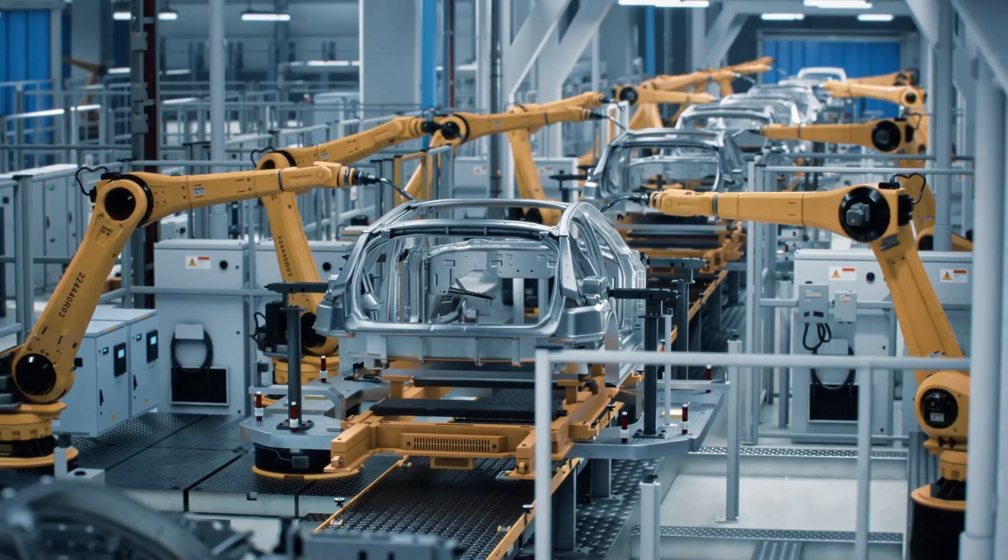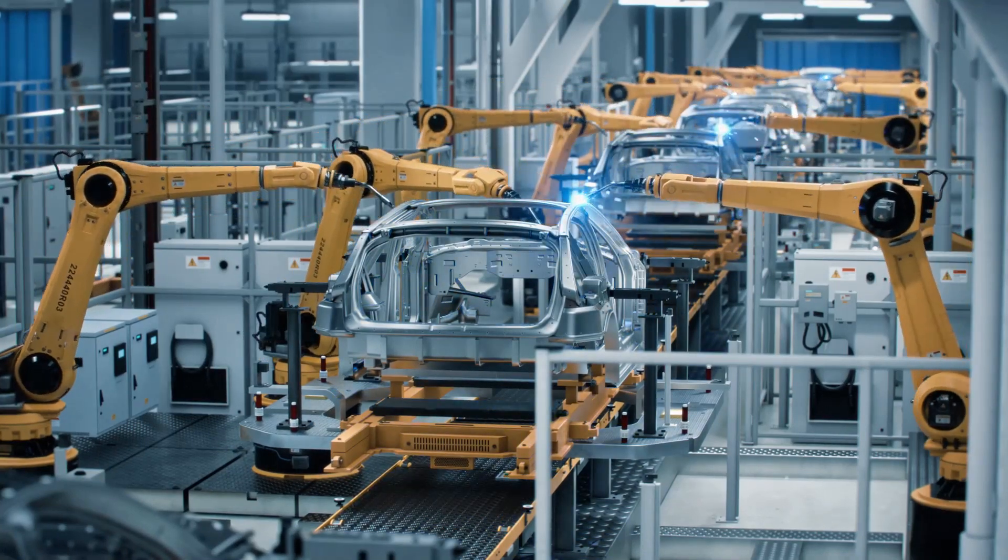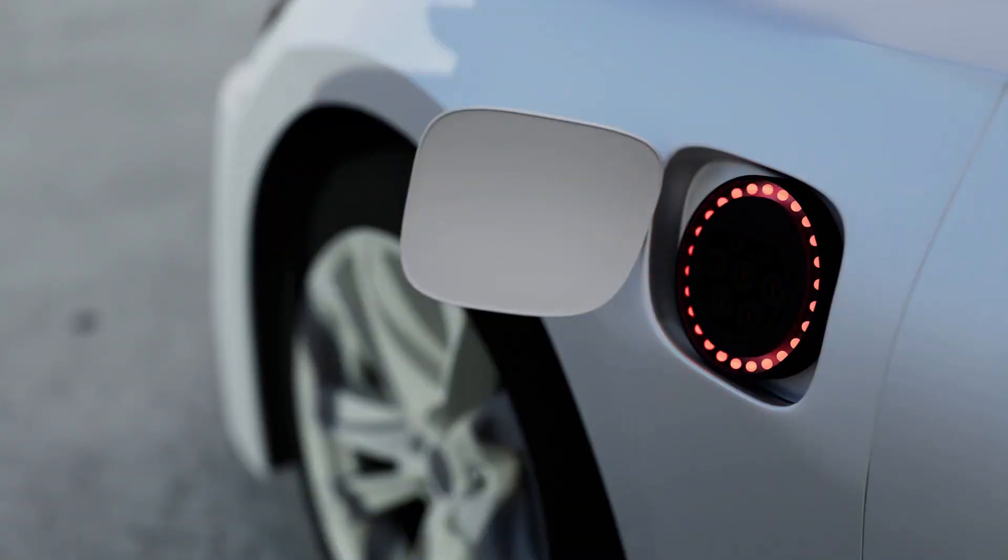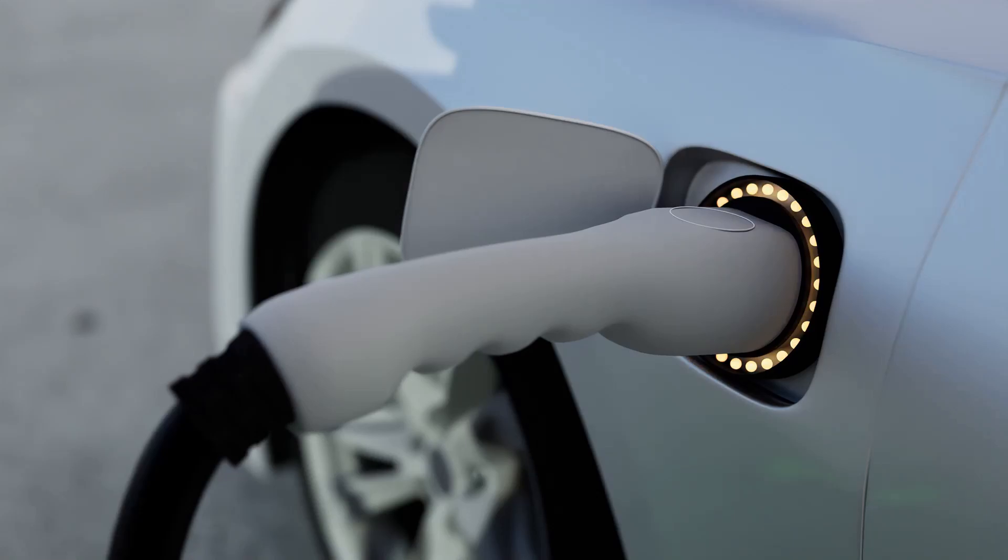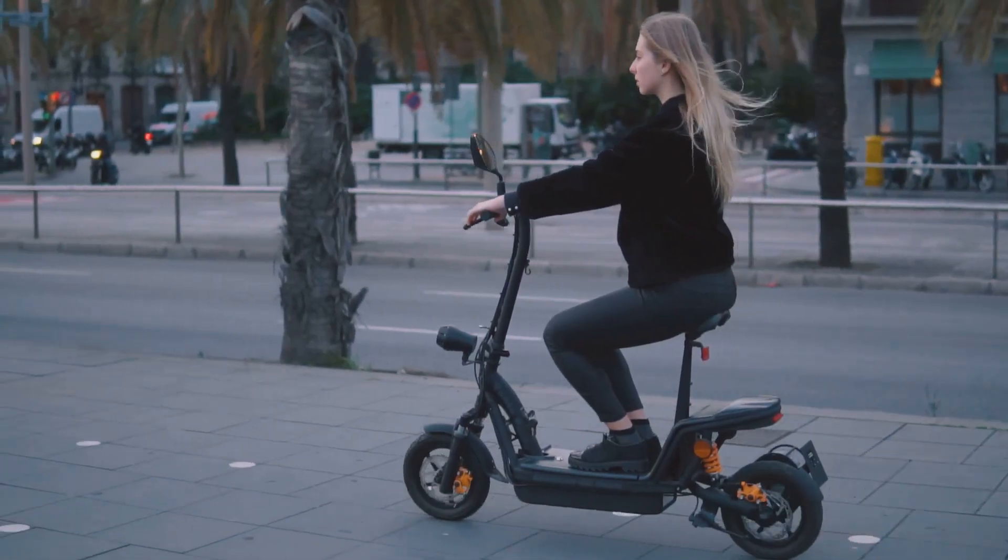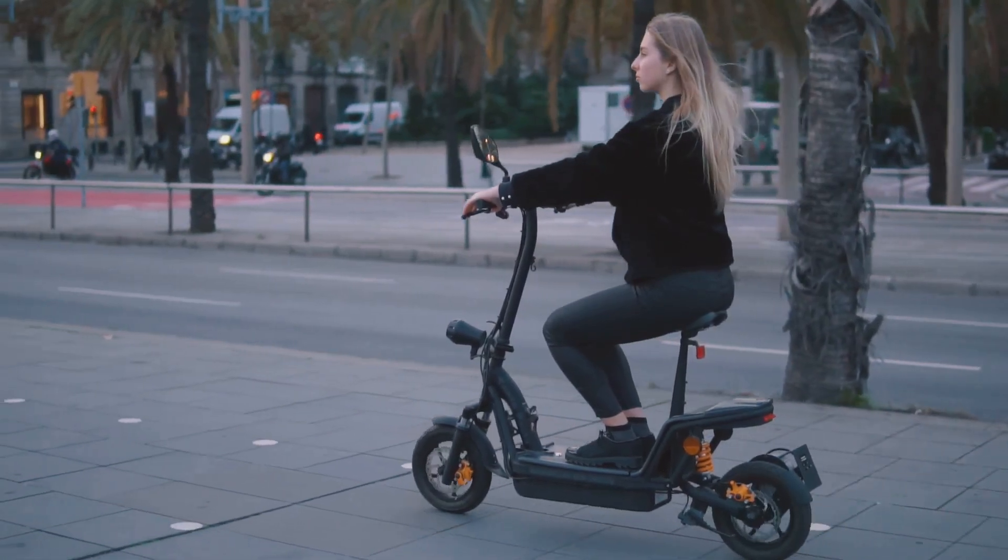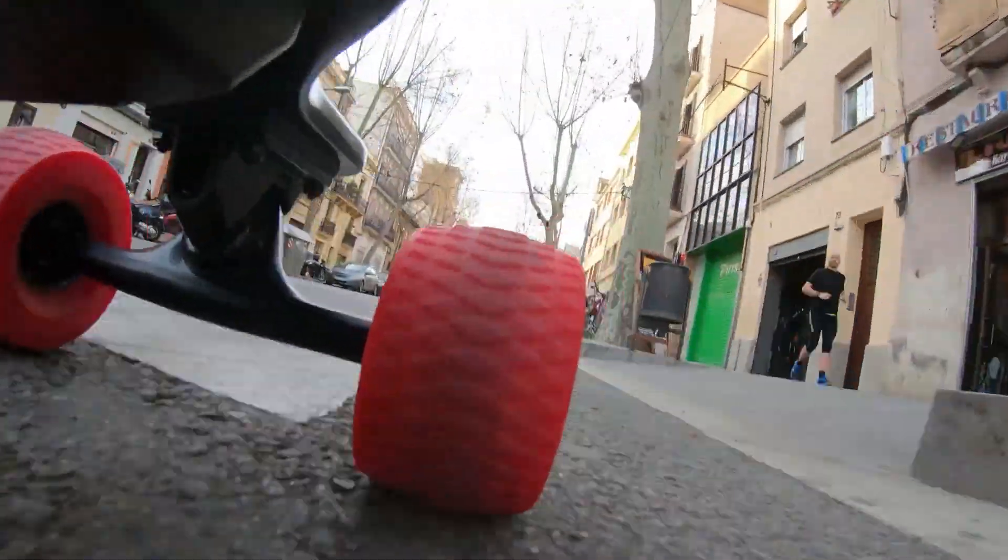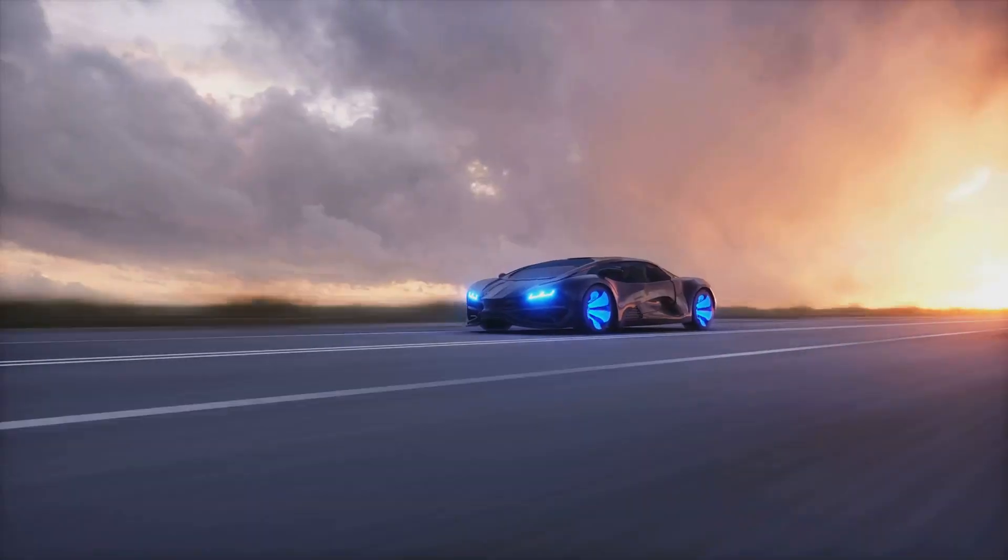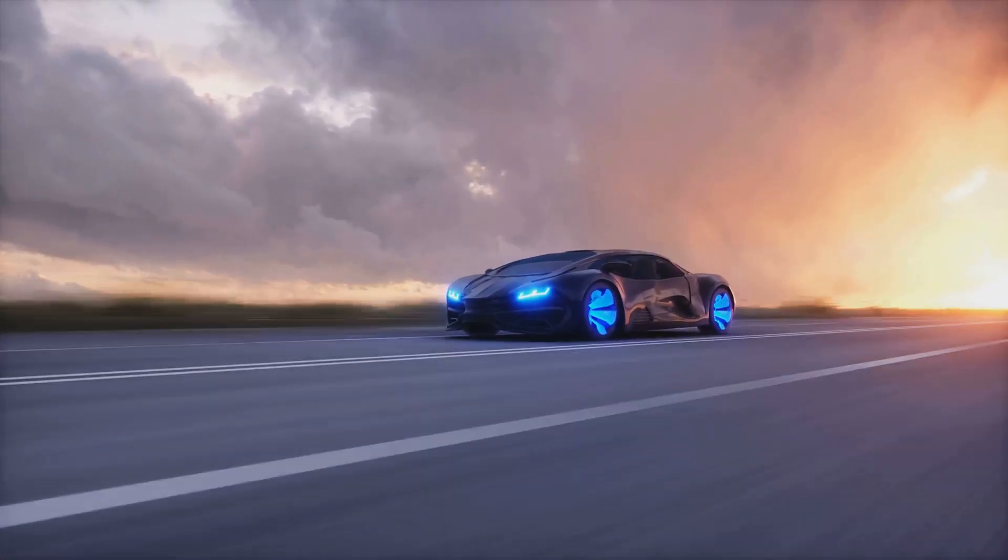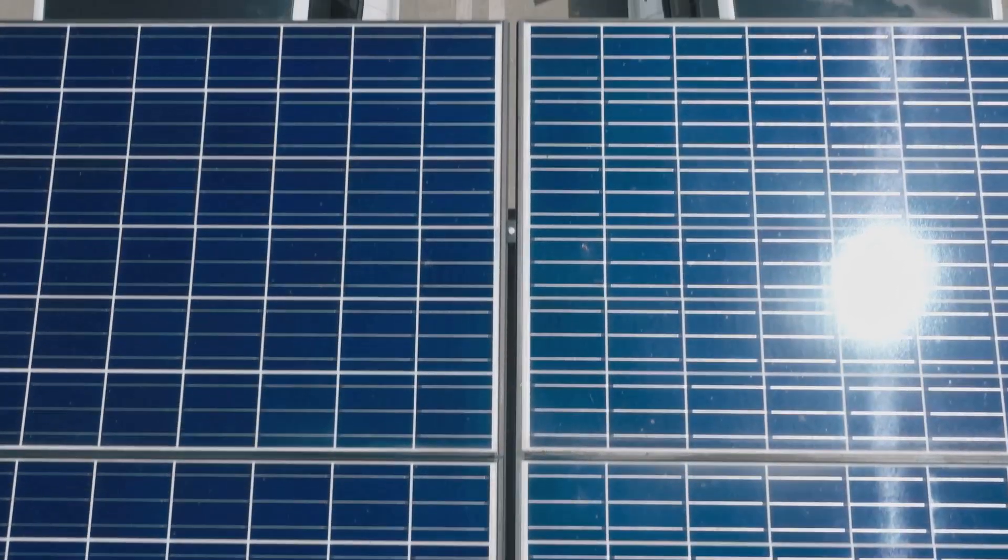The mobility sector is getting a solar-powered makeover. This transformation is more than just a trend, it's a revolution in sustainable transportation that's set to change the way we move and travel. Imagine cars, buses, trams, and even bikes powered by the boundless energy of the sun. These solar-powered vehicles are not a distant dream, but a rapidly approaching reality. Solar energy is fueling an evolution in transportation, breaking the chains of fossil fuel dependence and ushering in a new era of sustainable mobility.